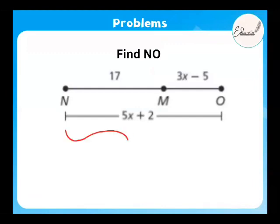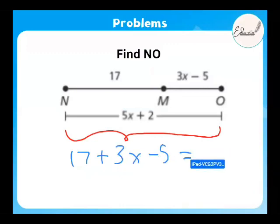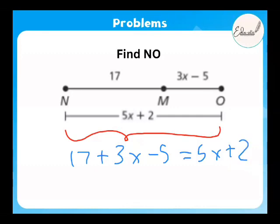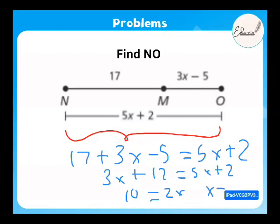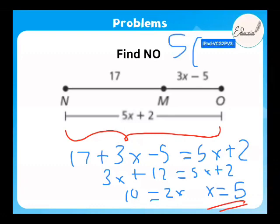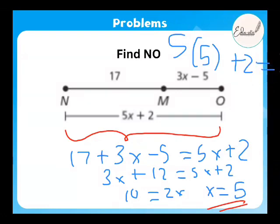Next problem: Find YML. We have 17 + 3x minus 5 = 5x + 2. So 3x + 12 = 5x + 2, giving 10 = 2x, so x = 5. Then NO = 5 times 5 plus 2 = 27. So NO equals 27.